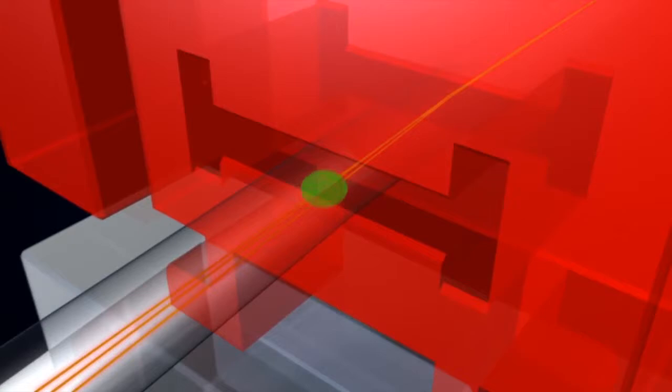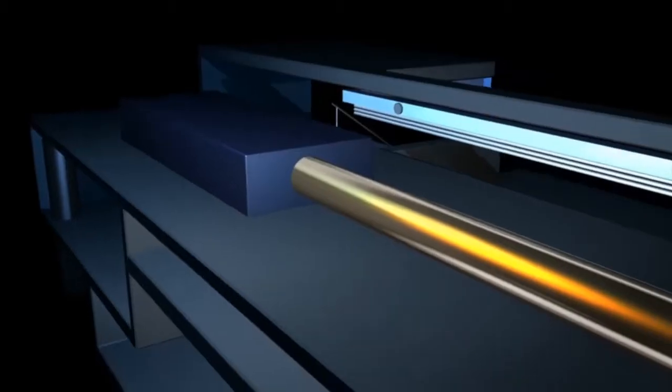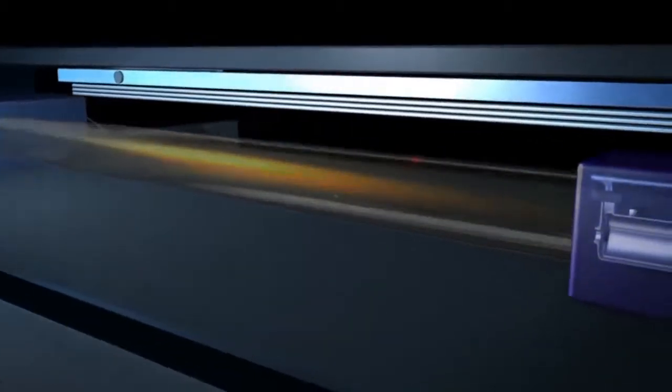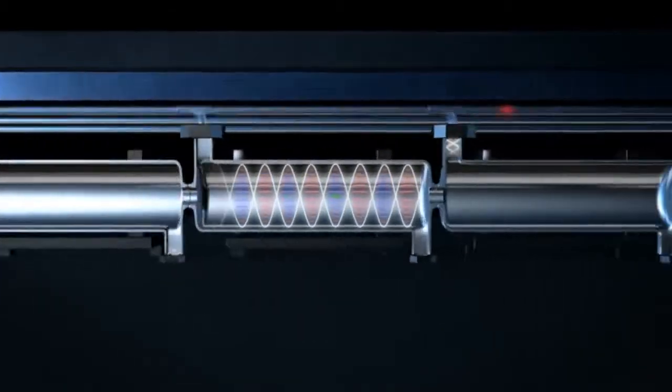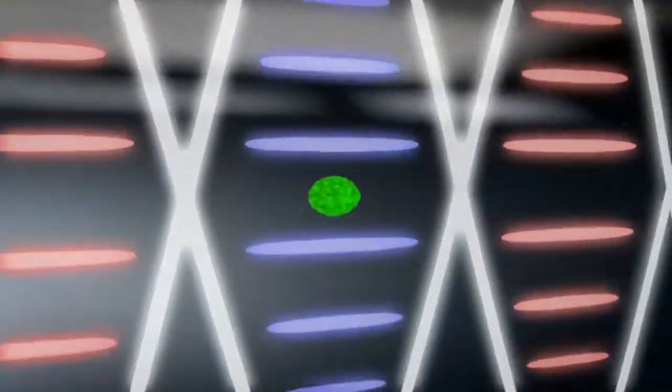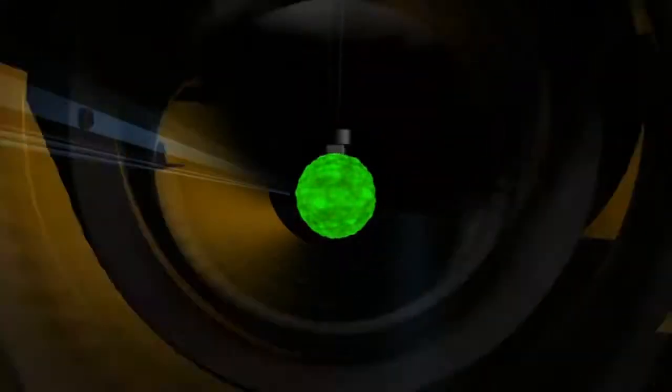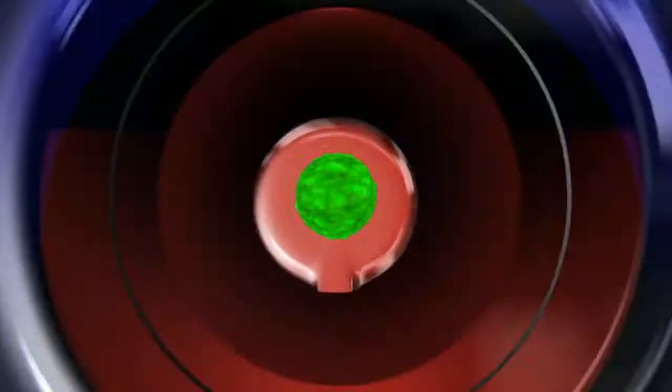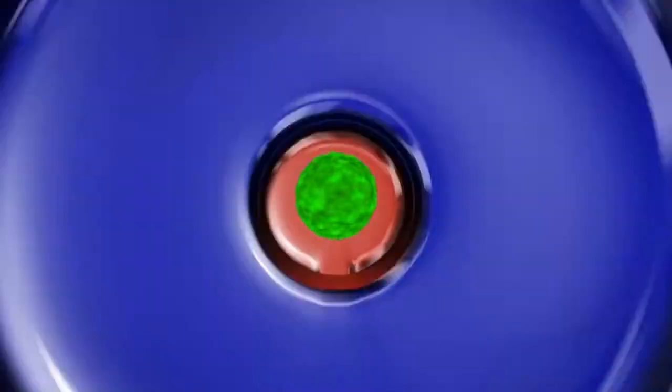The compressed electron bunch now passes into the linear accelerator which consists of 104 identical high-frequency accelerator structures. Here the electrons are accelerated further, or as Einstein would have put it, gain mass, until they reach their final energy: 6 billion electron volts.